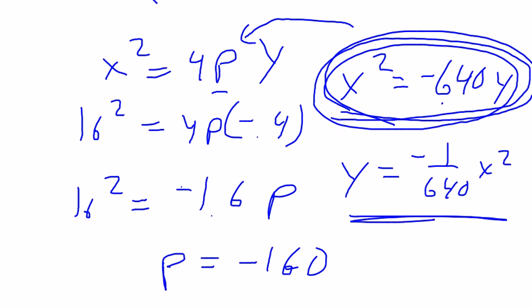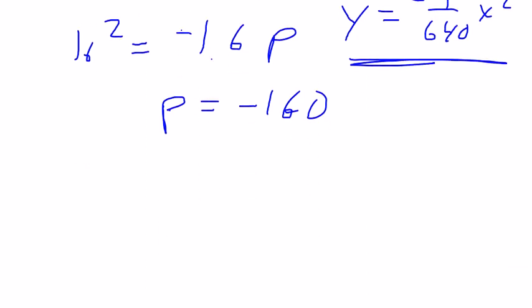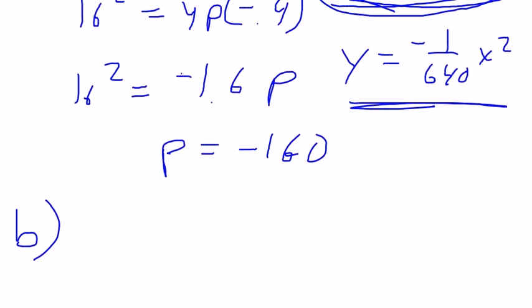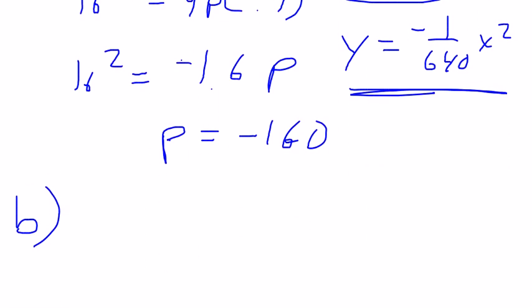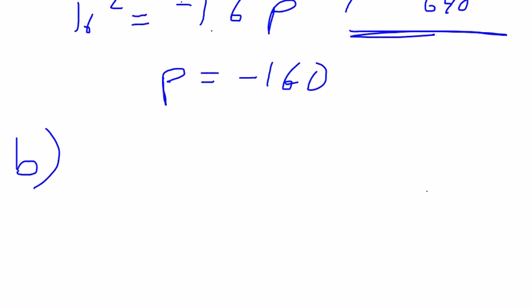So now what it says for, this is part A. So now what it says for part B, okay, now that you have an equation, it says how far from the center of the road is the road surface 0.1 feet lower than the middle?